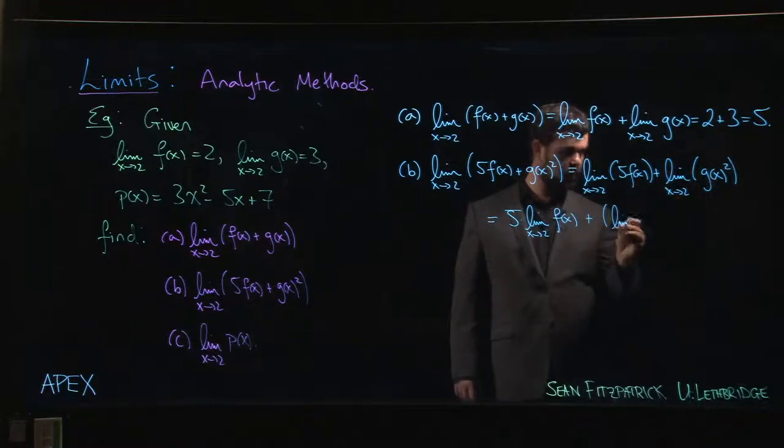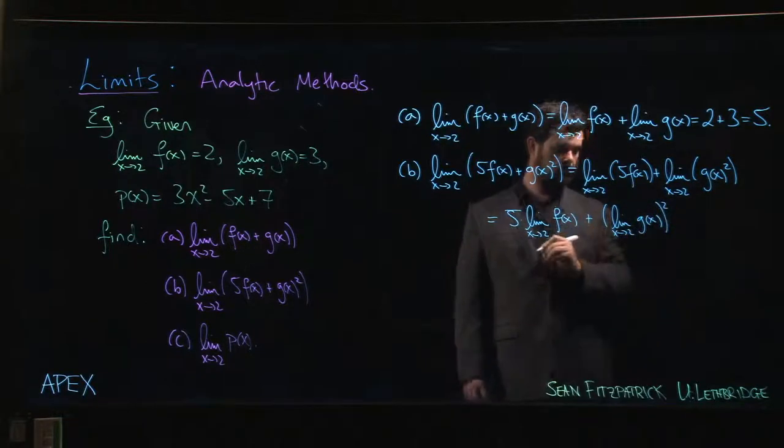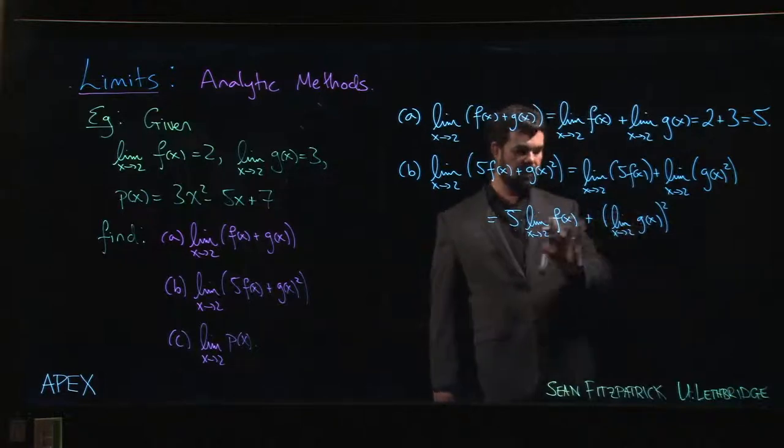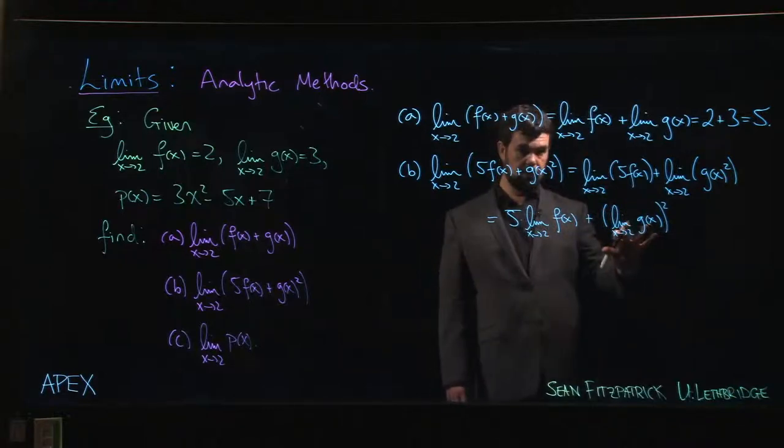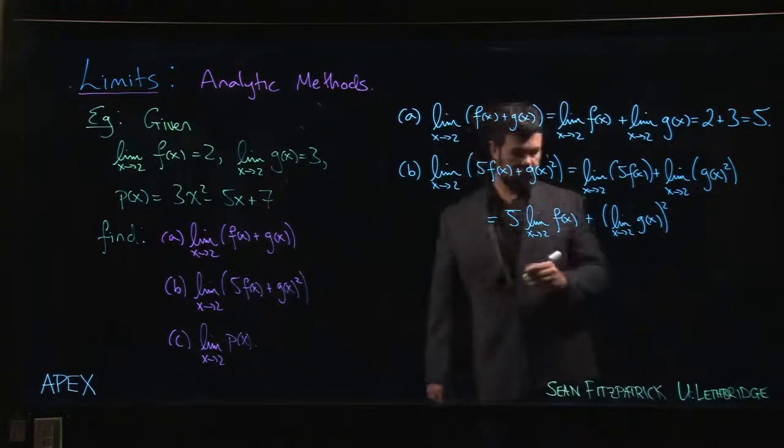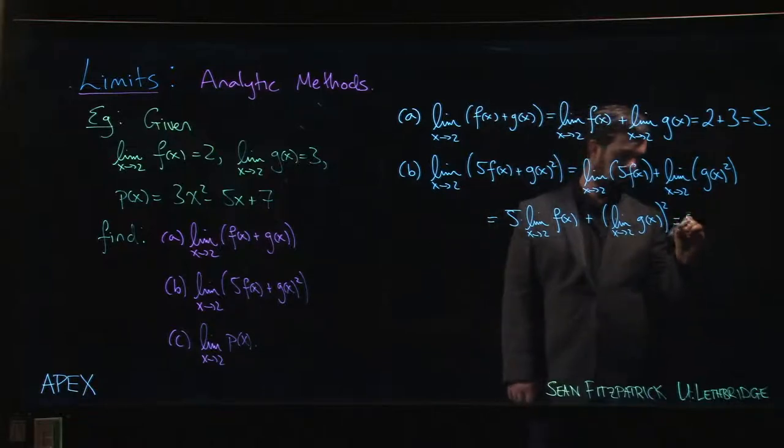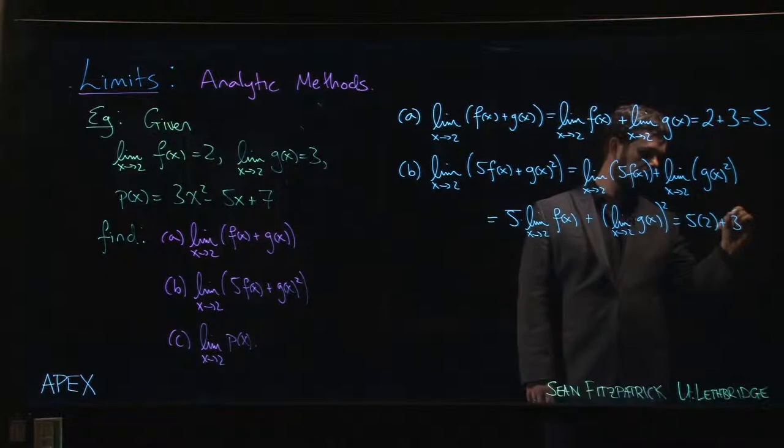So the limit of g(x) squared is the limit of g(x) and then squared. Now that we've got everything down in terms of the limit of f and limit of g, put in the numbers: that first one is 2, the second one is 3, and we have our result.